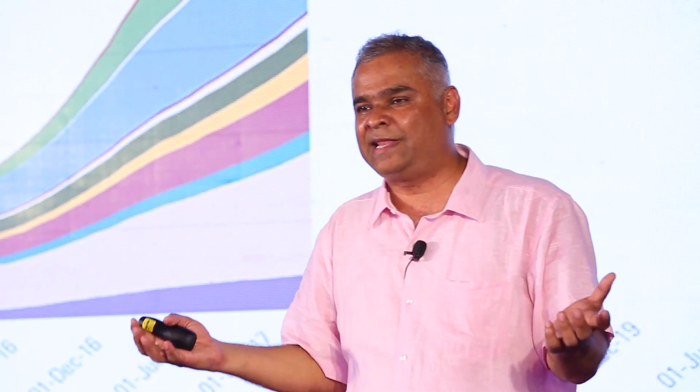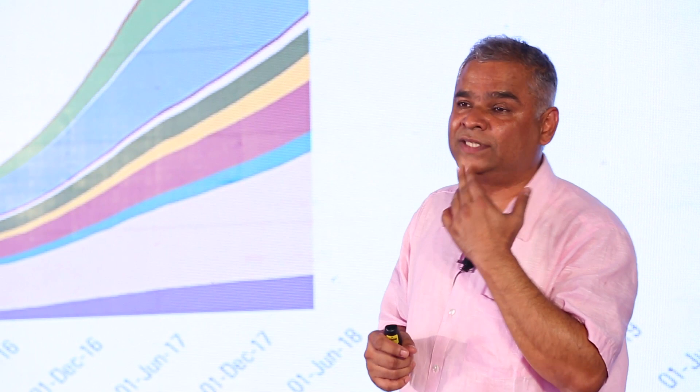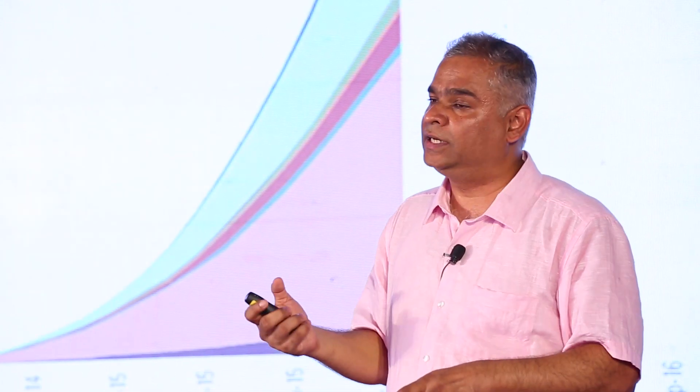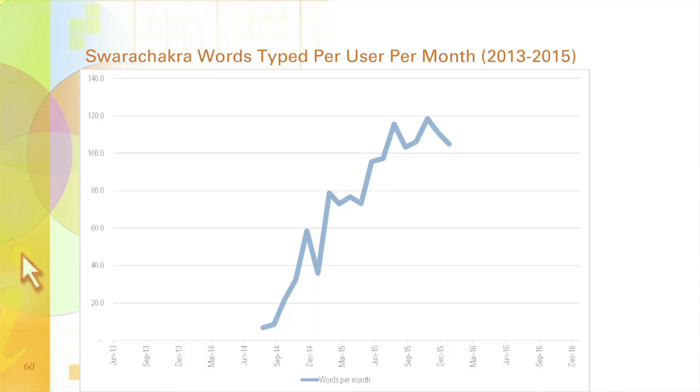We thought: this is a lab-based product, why are people downloading it, and are they even using it? We checked after one year and found that a group of 50,000 people had typed about 13 lakh words. Over the next couple of years, that rate increased — from 13 lakh words in one year to 20 crore words in three years. Earlier every user was typing about 10 words per month using our keyboard; in a couple of years they started typing 100 words a month. So we were quite satisfied that people can now type.